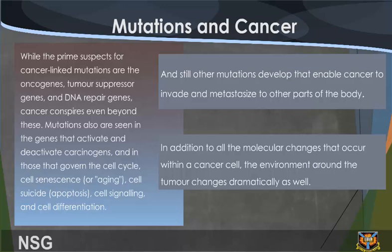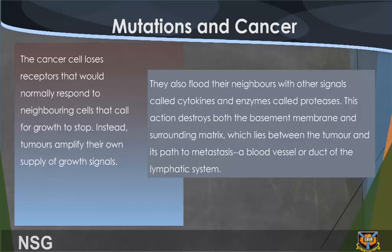In addition to the molecular changes that occur within a cancer cell, the environment around the tumor changes dramatically as well. The cancer cell loses receptors that would normally respond to neighboring cells that call for growth to stop. Instead, some cancer cells amplify their own supply of growth signals. They also flood their surroundings with other signals called cytokines and enzymes called proteases. This action destroys both the basement membrane and surrounding matrix, which lies between the tumor and its path to metastasis — a blood vessel or duct of the lymphatic system.